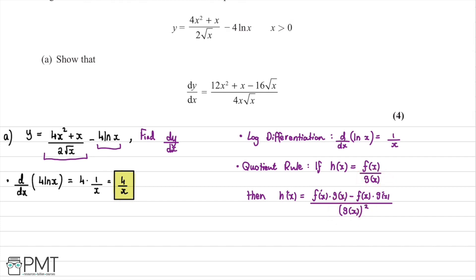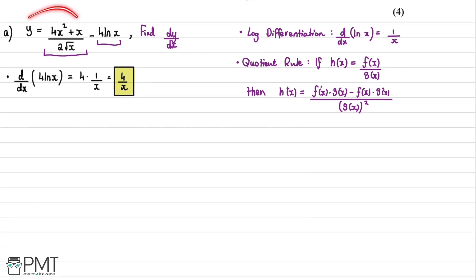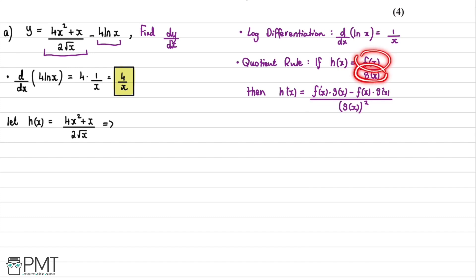We let h(x) = (4x² + x) / (2√x). So we can identify f(x) as the numerator, which is 4x² + x, and g(x) as the denominator, which is 2√x.